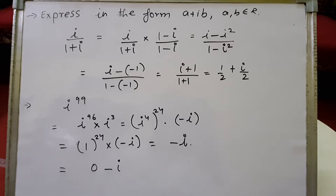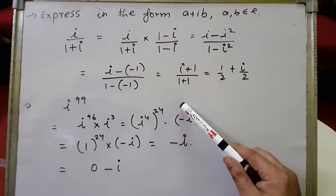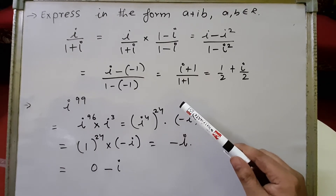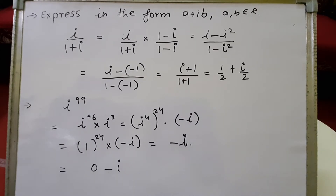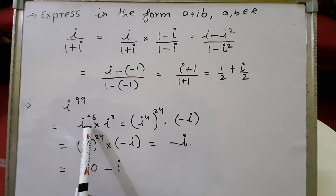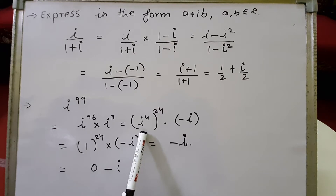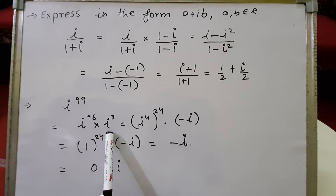Let's see another example. We have to express i to the power 99 in the form a plus ib. Whenever a large power of i is given, we break the power into two terms — one should be a multiple of 4. The maximum multiple of 4 here is 96, so we write i to the power 99 as i to the power 96 into i to the power 3. Since 96 is a multiple of 4, we write i to the power 96 as i to the power 4, to the whole power 24.